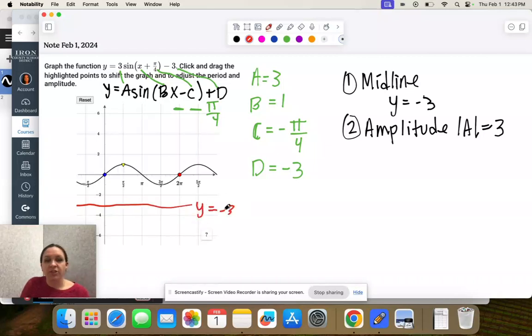And then I'm going to make sure my graph using my yellow one is stretched up to the axis, because that's 3 units. And then down to negative 6, because that's 3 units.